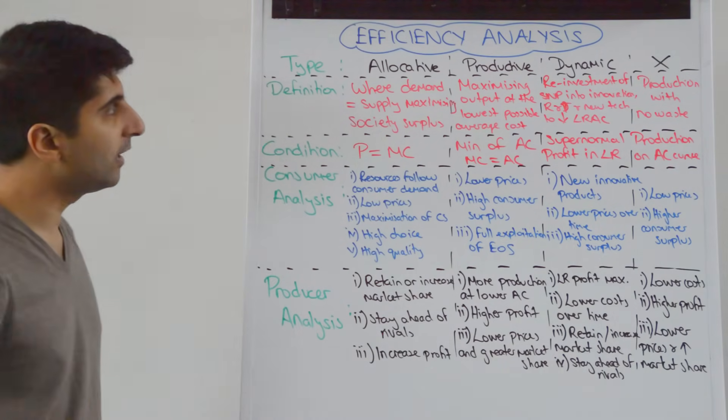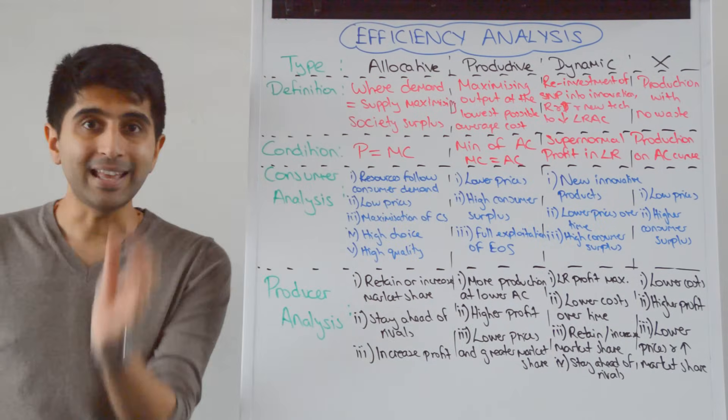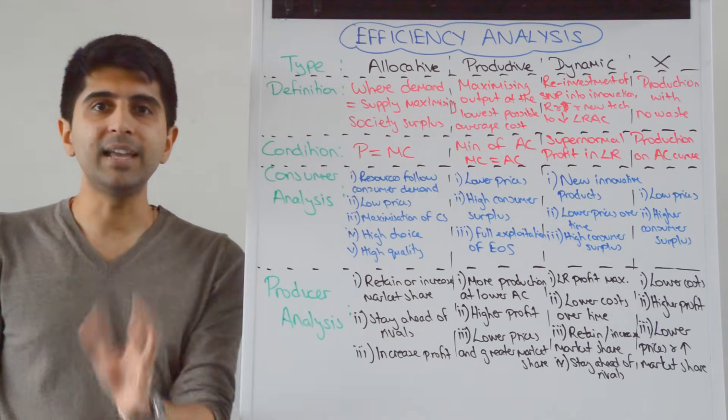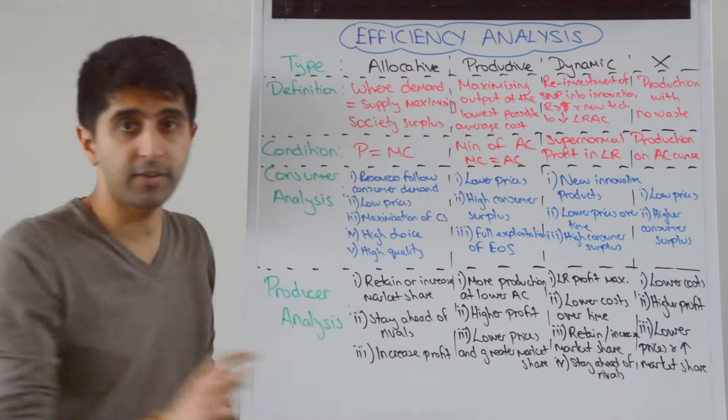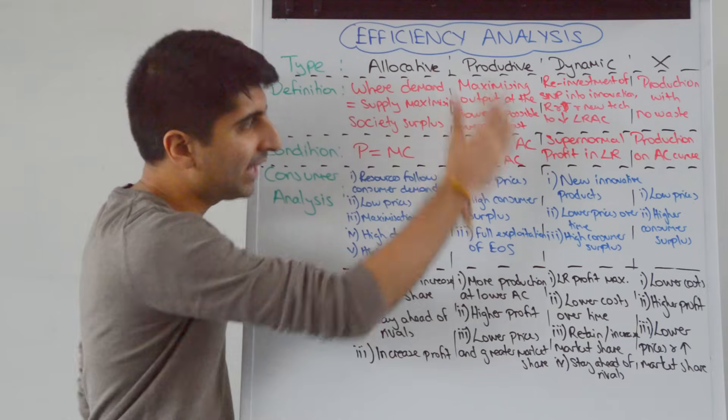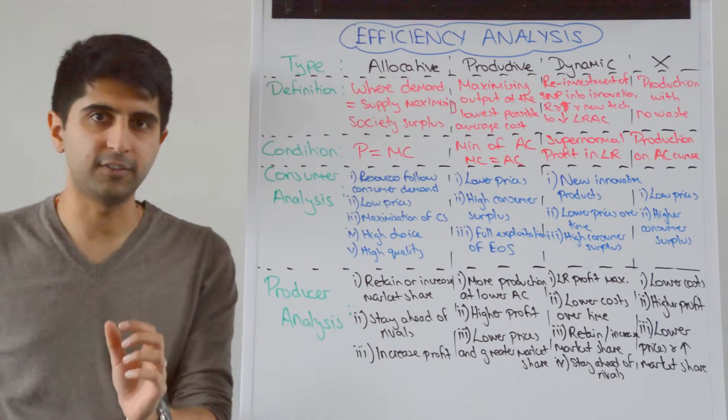Remember, just a little addition, that allocative, productive and X-efficiency is static efficiency, because they take place at one given production point, as we've seen here. These are very specific production points, whereas dynamic efficiency takes place over time. It is not a static efficiency.